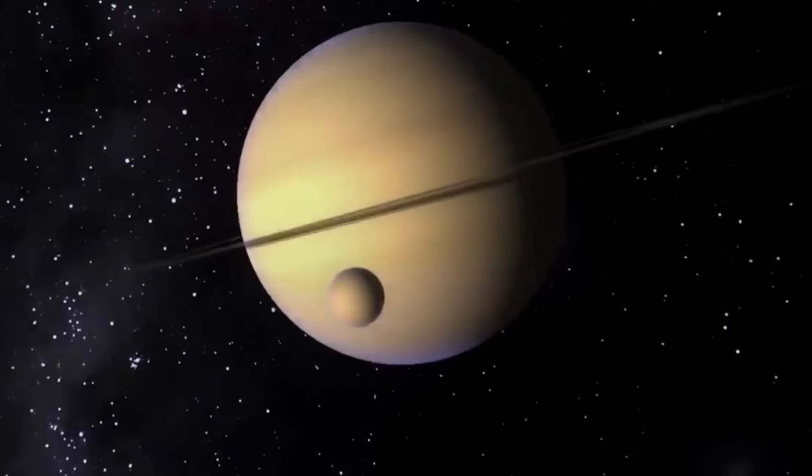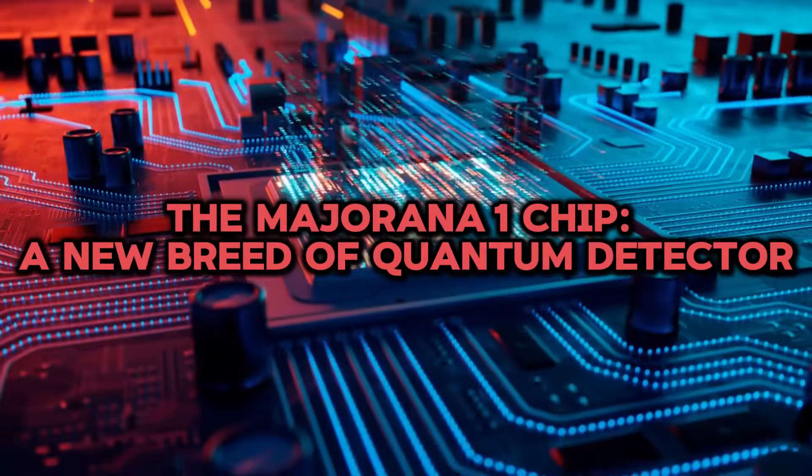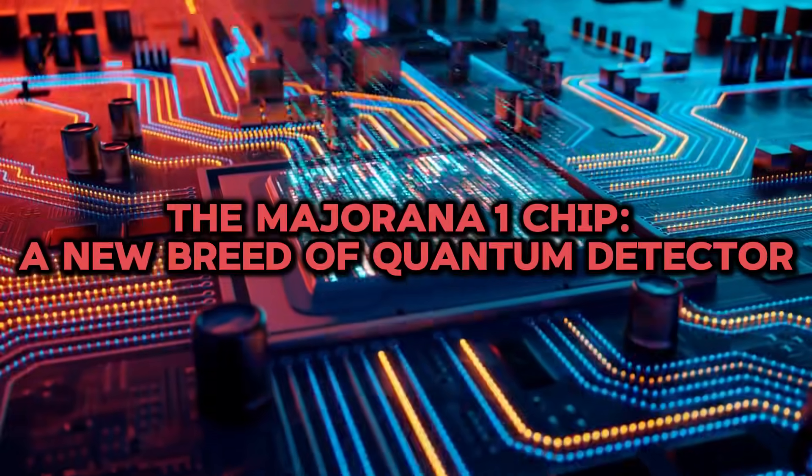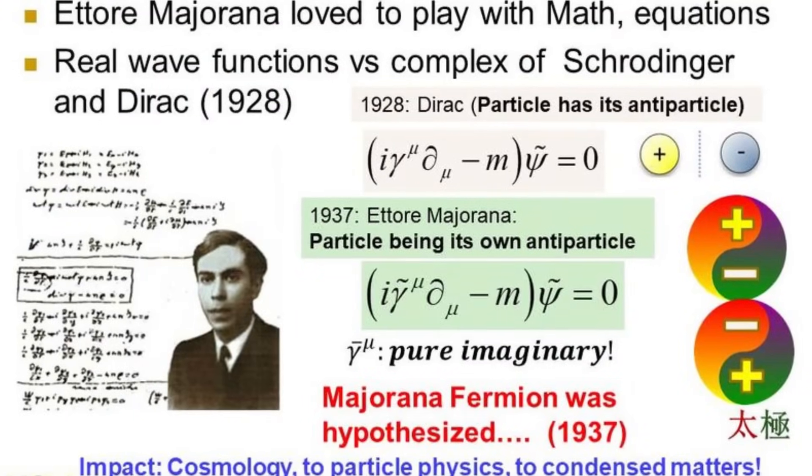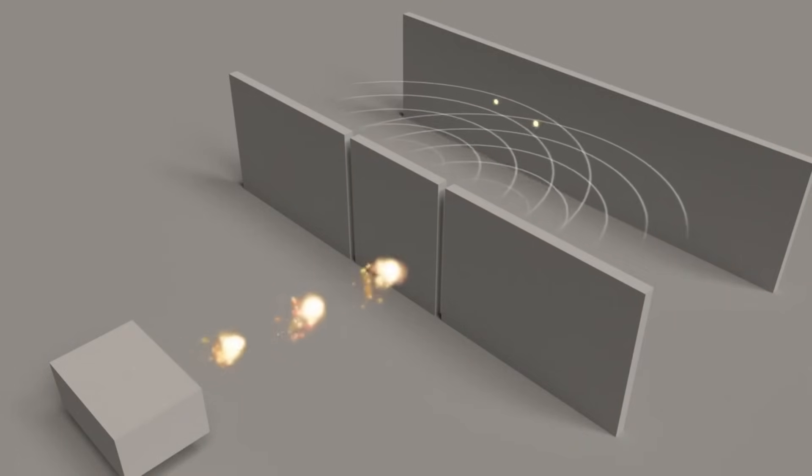We're diving deep into how a quantum chip spotted a disturbing pattern in Saturn's rings, why it matters, and what it could mean for the nature of reality itself. Majorana 1 is named after Ettore Majorana, the Italian physicist who predicted exotic fermions now hunted in topological quantum materials.